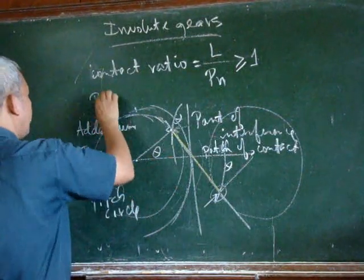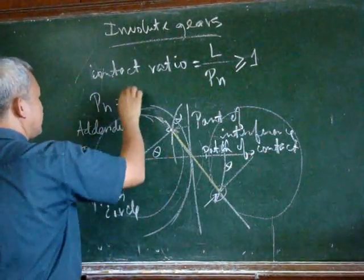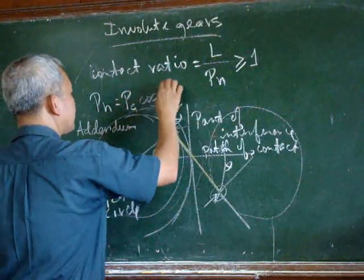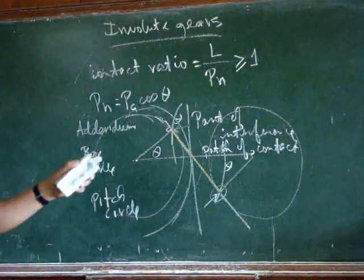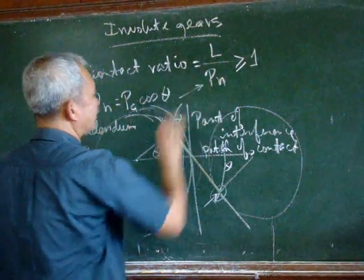And we have the normal pitch just equal to the circular pitch times cosine theta. So with that we can easily make this calculation.